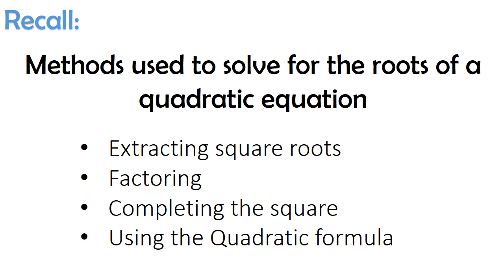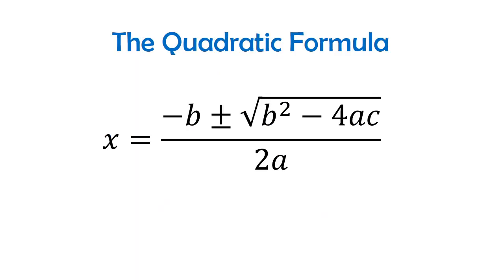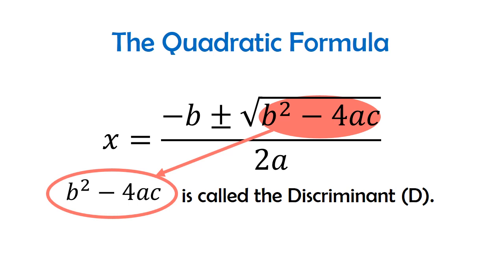In this lesson, the quadratic formula plays an important role. To determine the roots of quadratic equations using the quadratic formula, we have x is equal to negative b plus or minus the square root of b squared minus 4ac, all over 2a. The expression inside the radical, b squared minus 4ac, is called the discriminant.